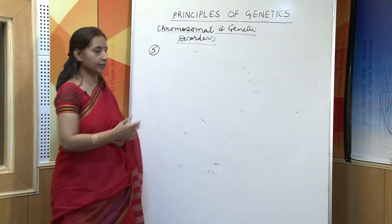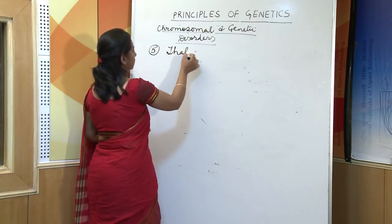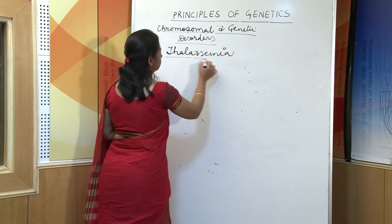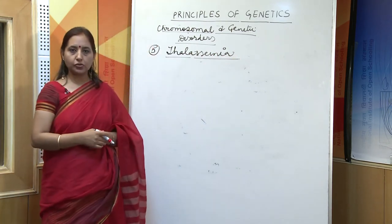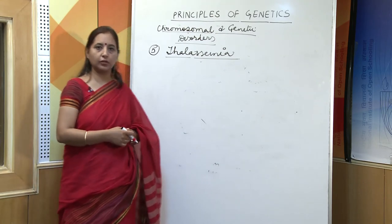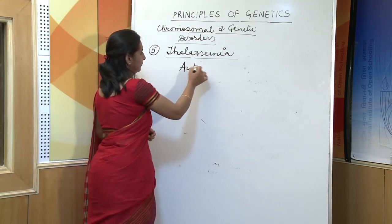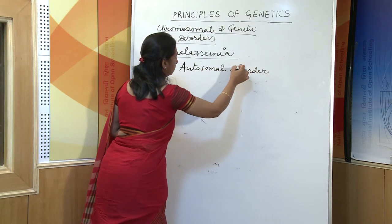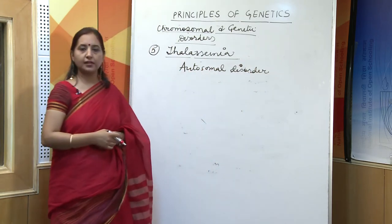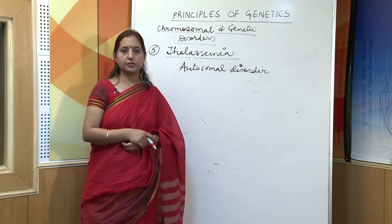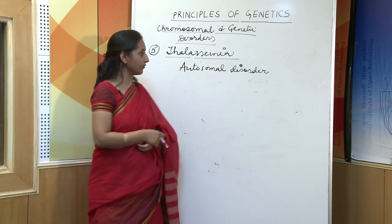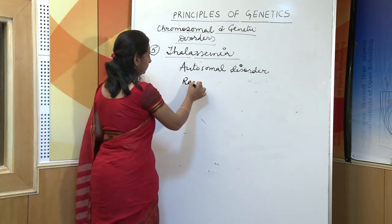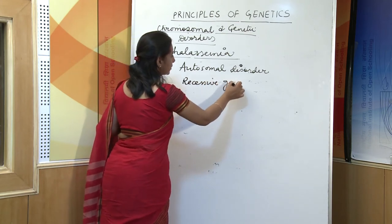The next genetic disorder is thalassemia. This is an autosomal disorder, wherein the defective gene is present on the autosome. In thalassemia, defective hemoglobin is found, and therefore the individual suffering from thalassemia has to undergo blood transfusion repeatedly. It is caused by a recessive gene.